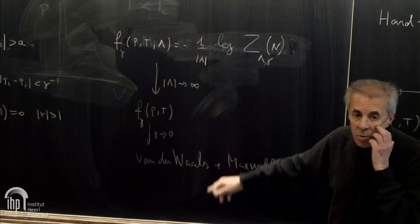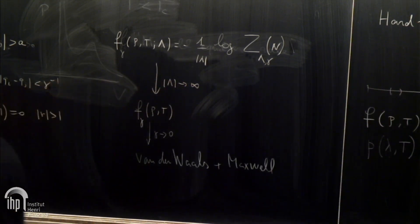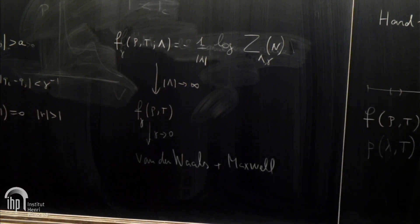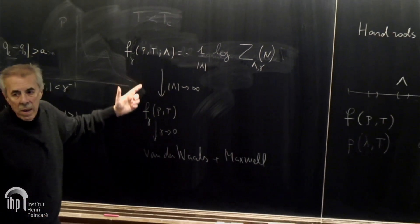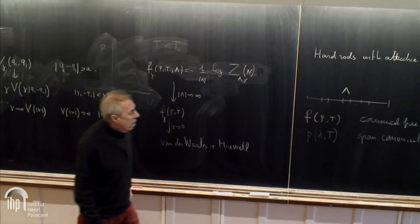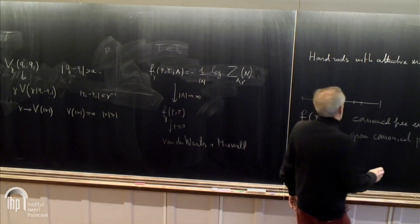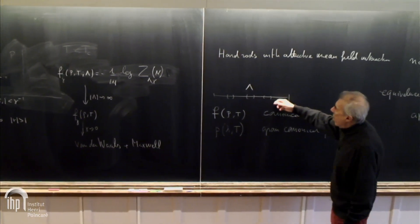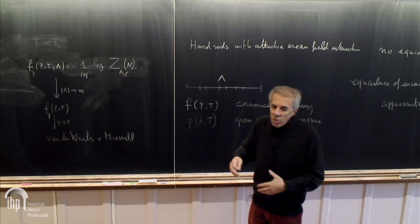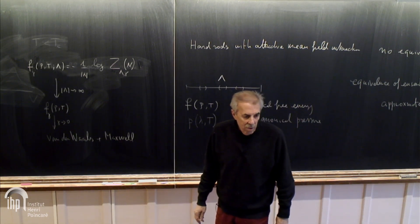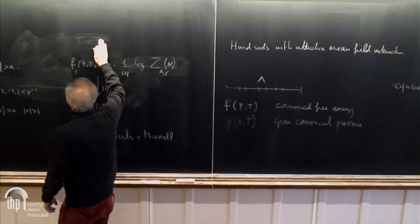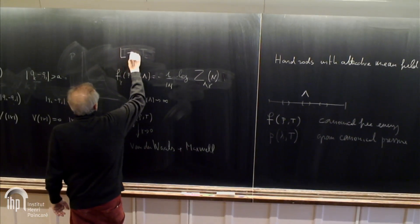This kind of theorem was proved by Kac, Uhlenbeck, and Emmer in some special cases, and in more general cases — not only for one-dimensional systems but in many dimensions and for more general interactions — by Lebowitz and Penrose. This usually goes under the name of the Lebowitz-Penrose theorem.